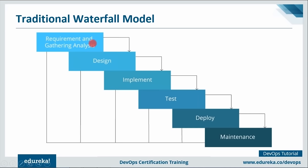Notice the diagram - it looks like a waterfall or a ladder. First, the client gives requirements and you gather and analyze them. Then you design the application, write the code and build it - which involves compiling, unit testing and packaging. After that, it is deployed onto test servers for testing, then onto production servers for release. Once the application is live, it is monitored.